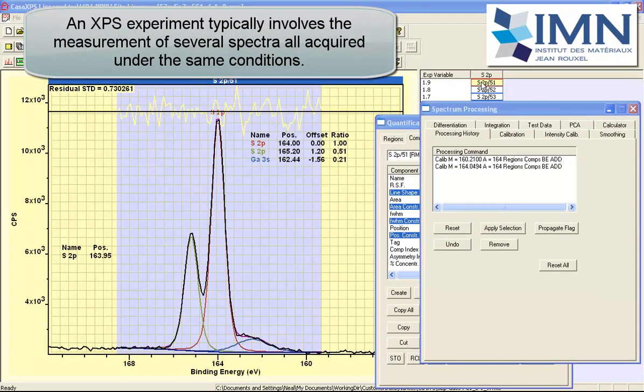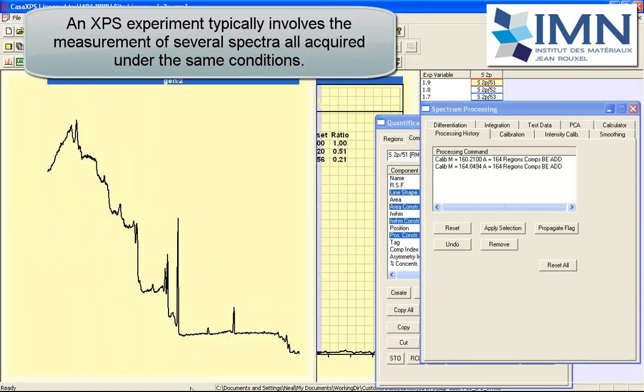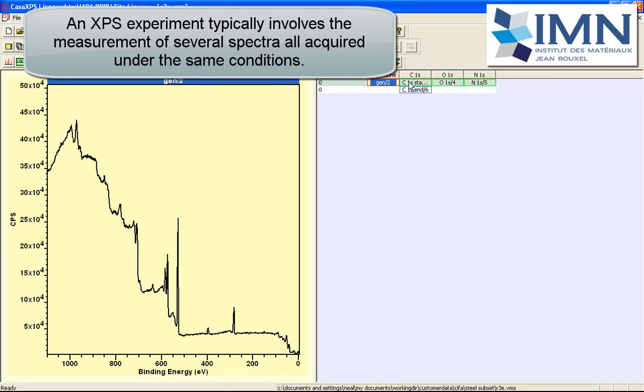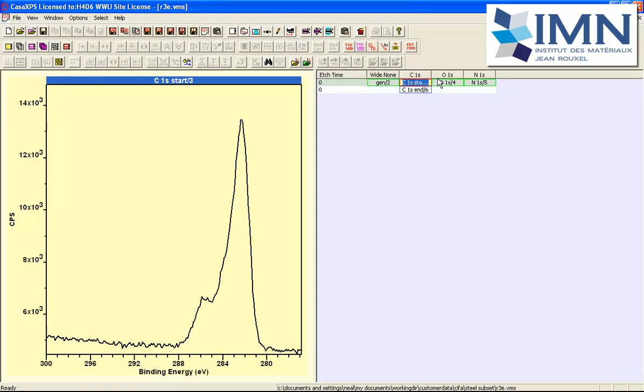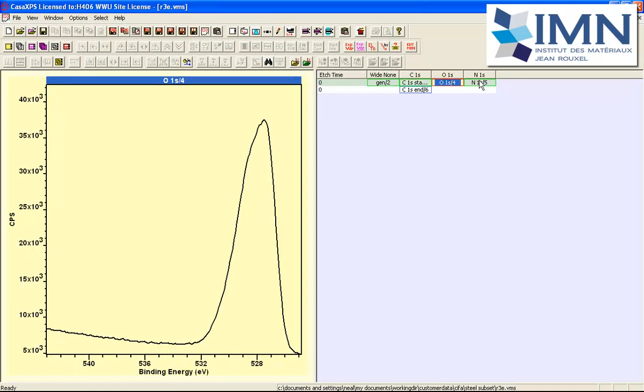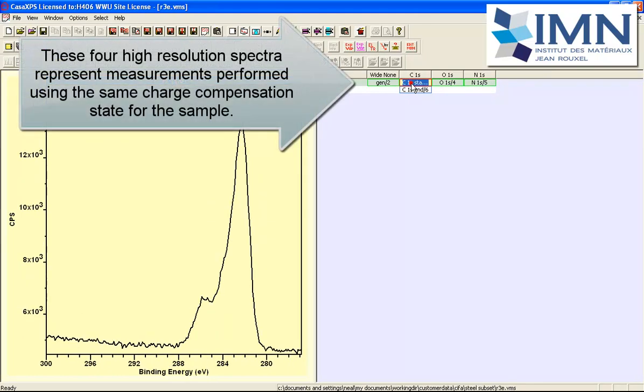These measurements were performed to illustrate that a charge compensation state can alter the position for a peak. More typically a measurement is performed using similar charge compensation states. However the material itself can cause a different response and therefore peaks shift in slightly different ways depending on the material. However when we have charge compensation active we presume that each one of these high resolution spectra that were measured sequentially will have the same compensation state so we should shift them by the same amount.